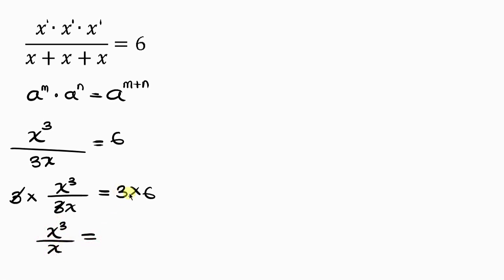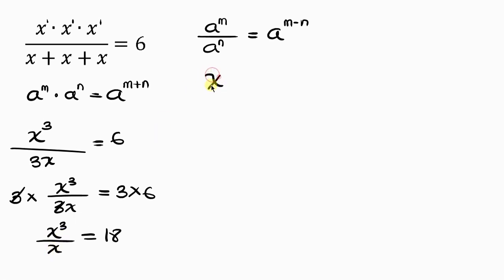That equals 18. Our next step is to apply the law of indices to the left-hand side. If I have a to the m divided by a to the n, and the bases are the same, the law says take one base and subtract the powers. So I take x and subtract the powers: 3 minus 1 is 2. So x squared equals 18.